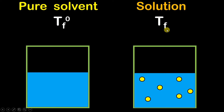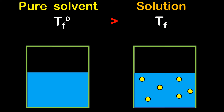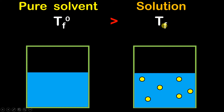We assume that the freezing point of this solution is Tf. We generally observe that Tf, the freezing point of the solution, will be less than the freezing point of the pure solvent. This concept is called depression in freezing point — the freezing point decreases from Tf0 to Tf when you add a non-volatile solute.